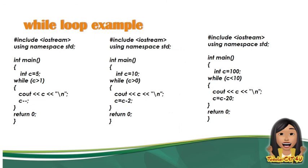Ito naman yung isang example. Sabihin natin C is equal to 100. 100 ba ay mas maliit sa 10? This is false — ibig sabihin mag-terminate na ito agad. Kaya dapat maingat kayo sa mga symbol na ginagamit ninyo, or sa logical operator na gagamitin ninyo. Lagi niyong titignan kung tama ba — kasi kung 100, mas malaki ba si 100 sa 10 o mas maliit ba si 100 sa 10? Nag-false na siya agad, automatic din niyang gagawin ito. Hindi niya na ma-perform yung desired output dapat.